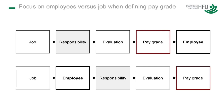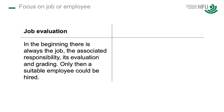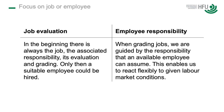Some companies don't want to do this, and employee representatives often don't either. This is what some companies name flexible grading. Let me translate this into a strategic statement. The traditional approach goes like this: in the beginning, there is always the job, the associated responsibility, its evaluation, and grading — only then can a suitable employee be hired. The flexible way goes like this: when creating jobs, we are guided by the responsibility that an available employee can assume. This enables us to react flexibly to given labor market conditions. That's interesting — not so simple.